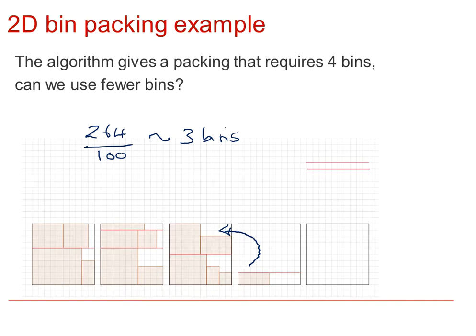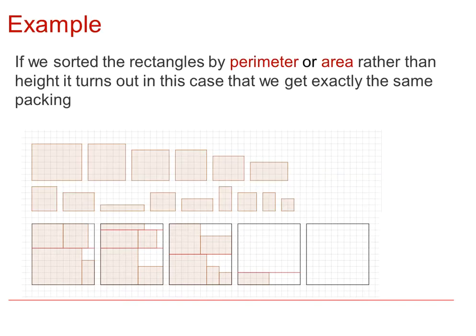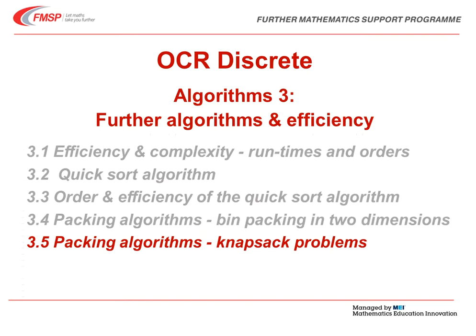Again, this is an example where our human brains, when we're dealing with small problems, find a better solution than an algorithm. If we were to change the aspect and sort these items by perimeter or area, rather than by height, it would turn out that in this case, we get exactly the same packing. So the algorithm is reasonably robust. In the next video, we'll look at packing algorithms to deal with the Napstack problem.